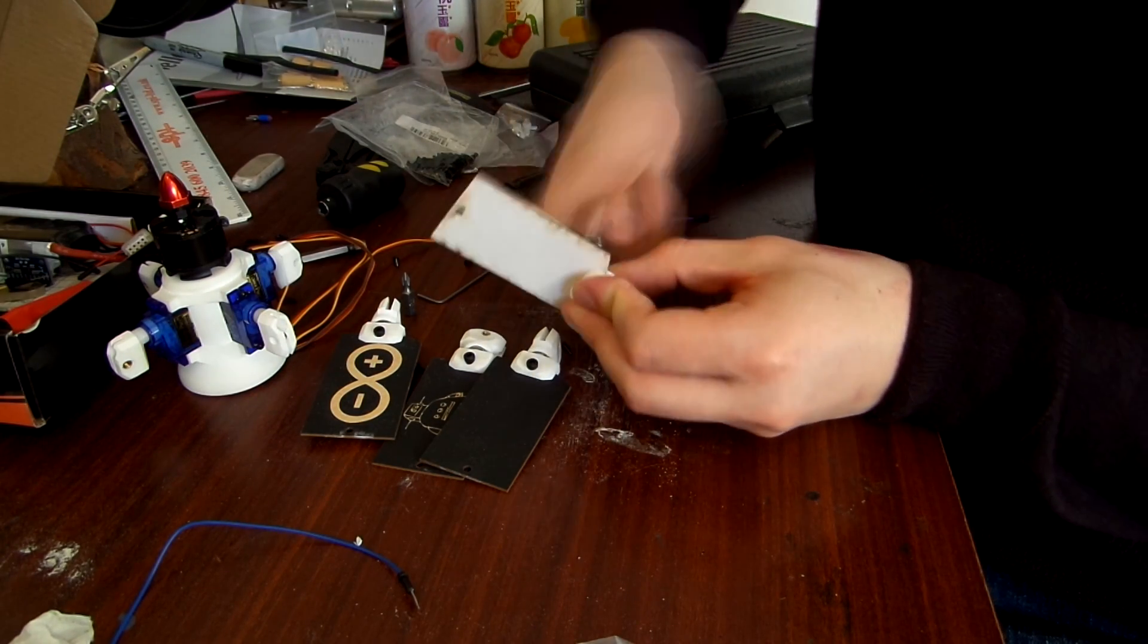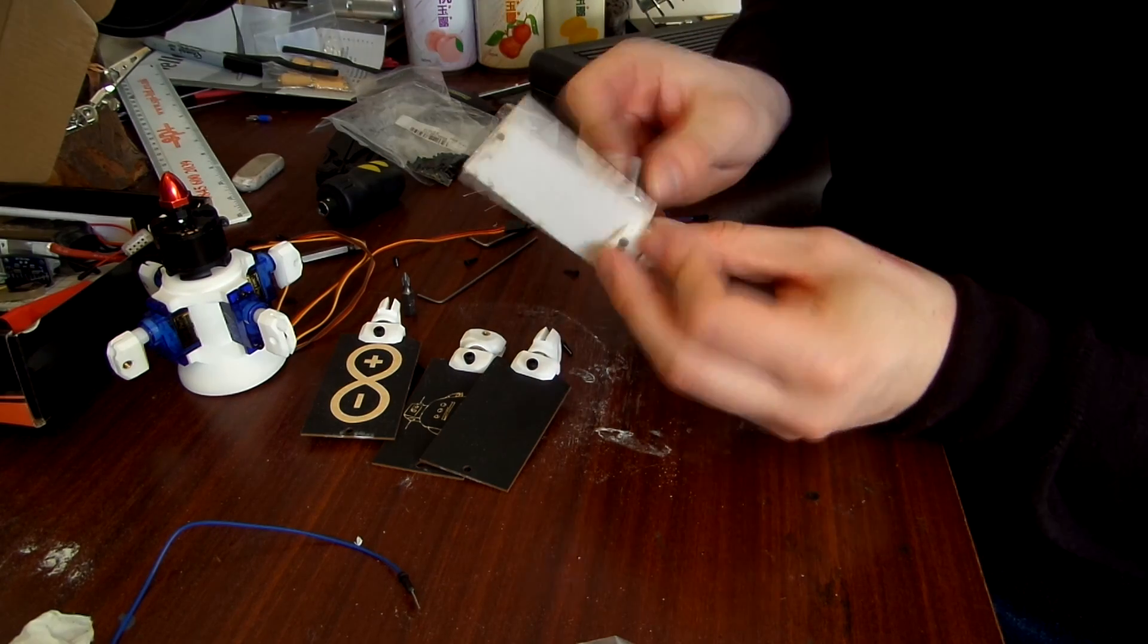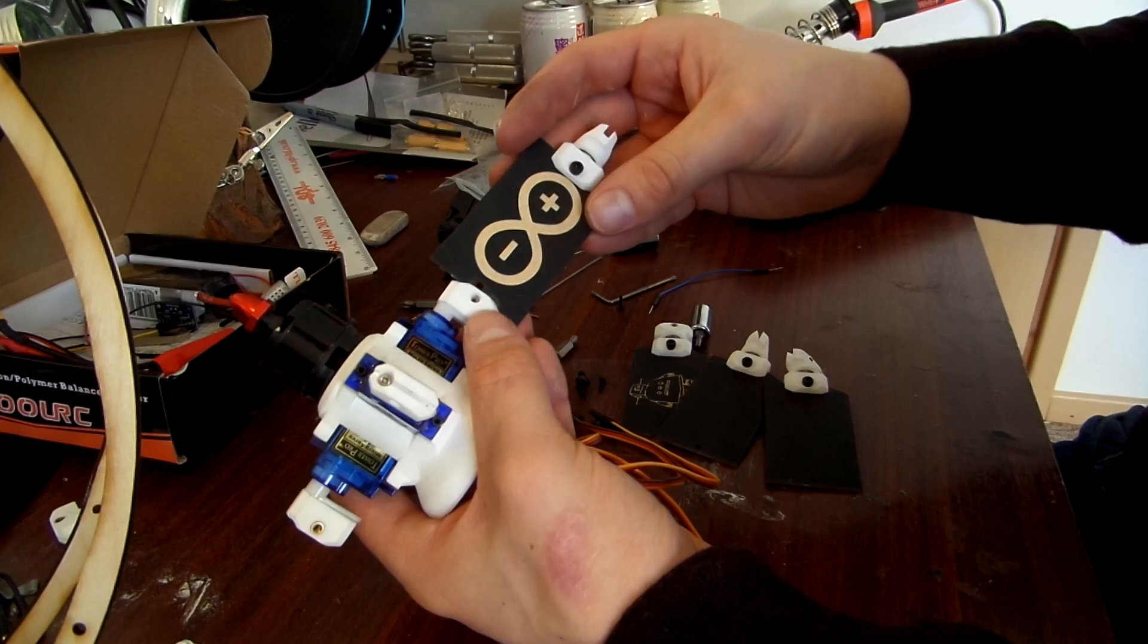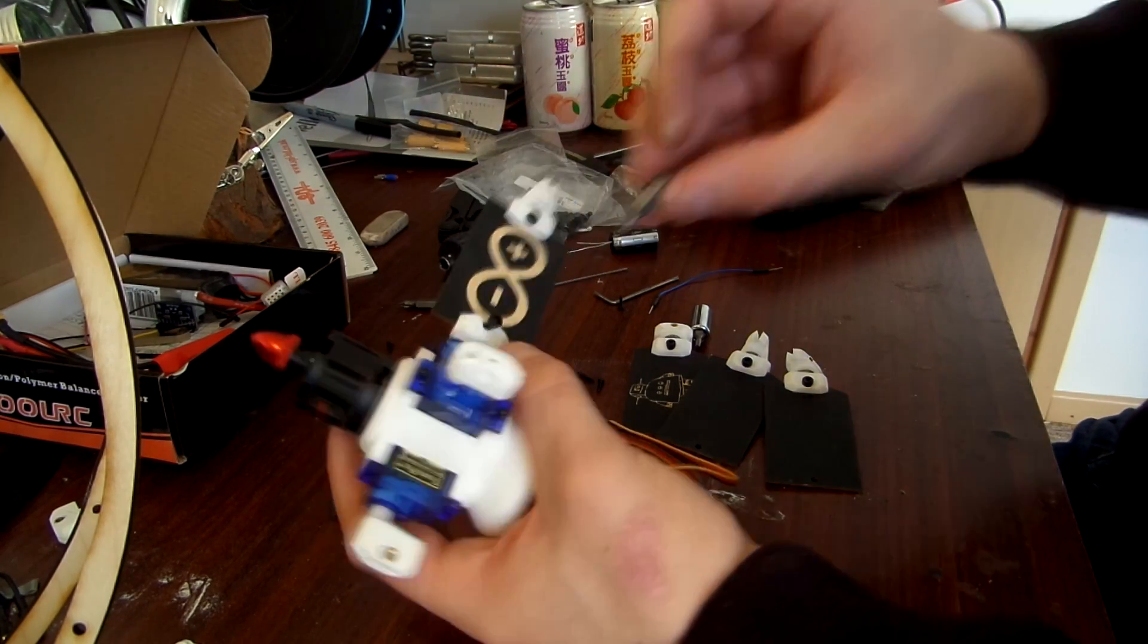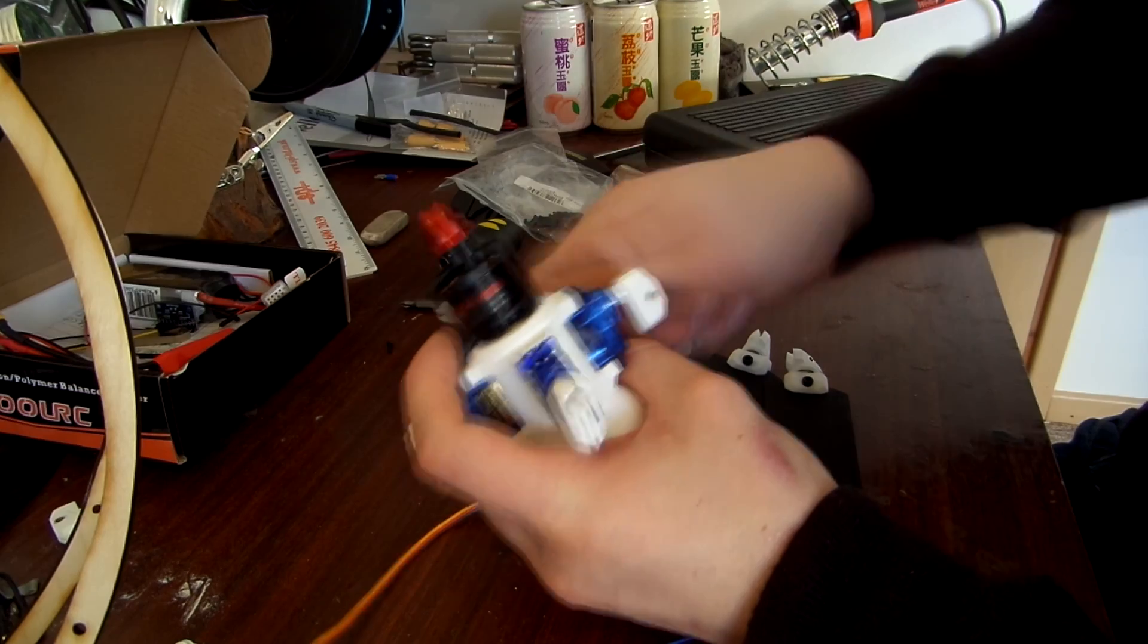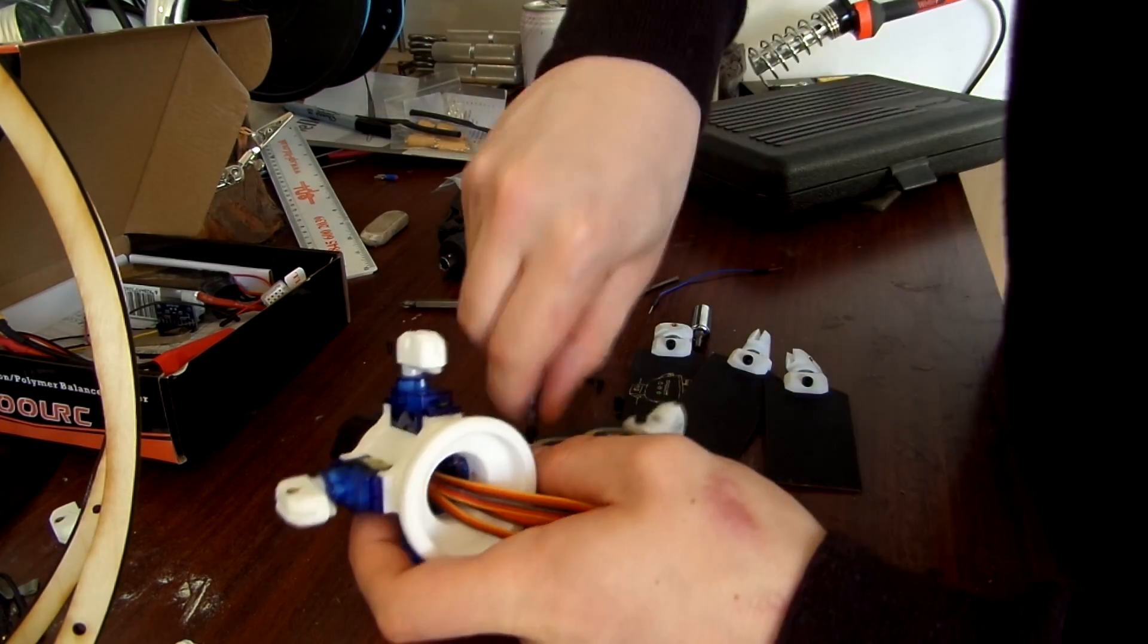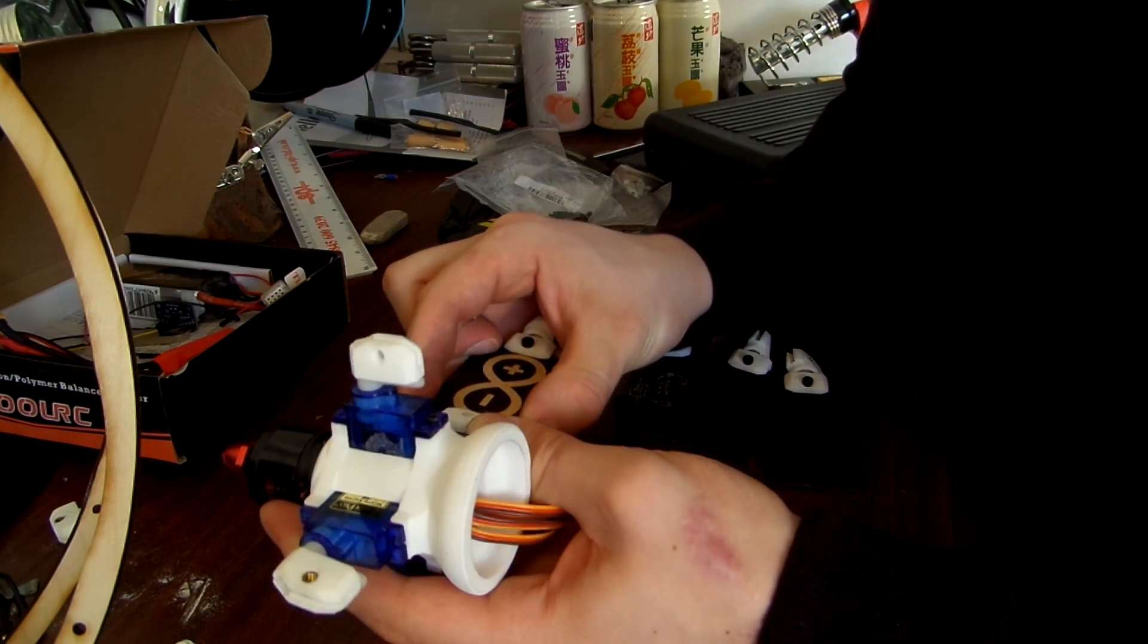They basically just restrict the rotation of the fins to a single plane so that they're not going all over the place getting blown off course. And here you can see they're just going straight into the servos and that's one completed fin.